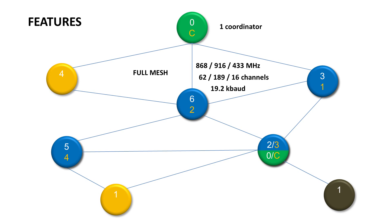In a full-mesh topology you have just one coordinator and up to 239 nodes, while each one of them can, but doesn't have to, work as a router.